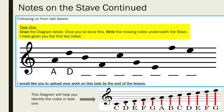So Task 1: notes on the stave, continued — following on from last lesson. For Task 1, I'd like you to draw the diagram below: that's the treble clef, the staves, and all the dots on the stave — the notes on the stave. Draw the diagram below. Once you've done this, write the missing notes underneath the stave. I have given you the first two notes. You can see we've got the stave, which are the five lines, the treble clef which is the sort of swirly-looking figure on the left, and also all the dots that are on the stave either on a line or in the spaces — so be careful where you place them.